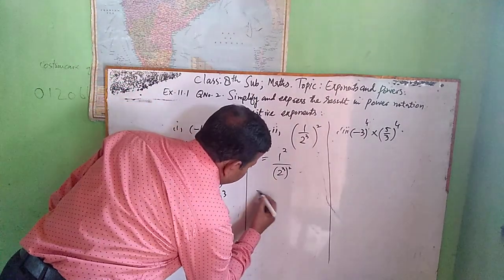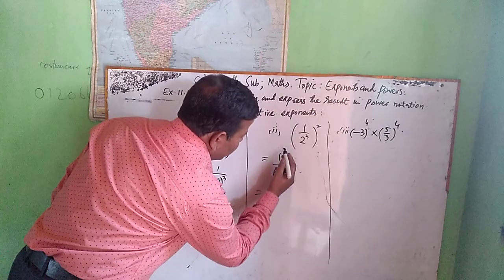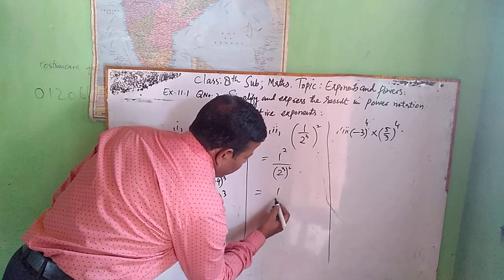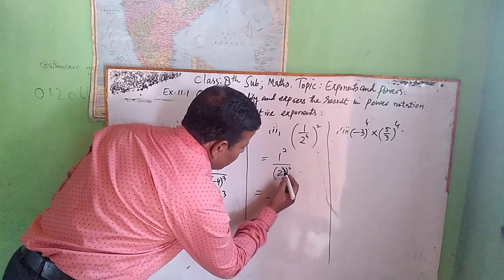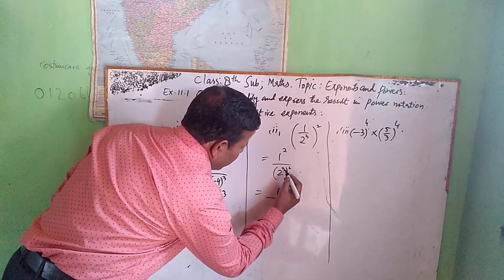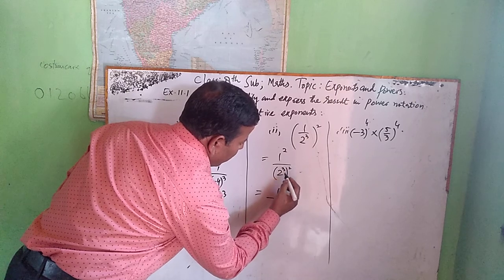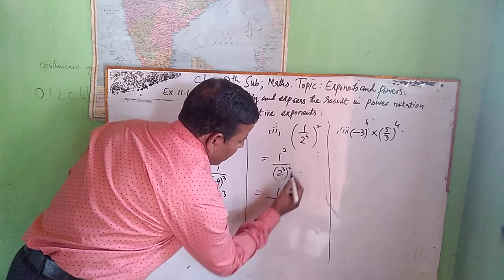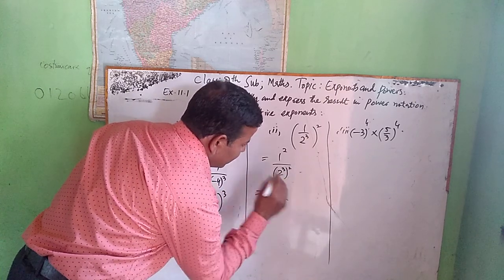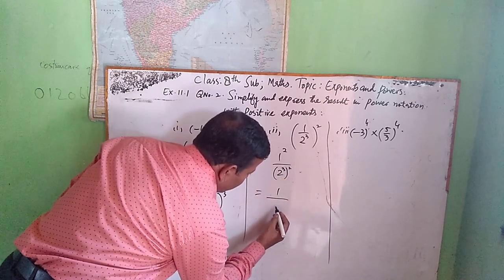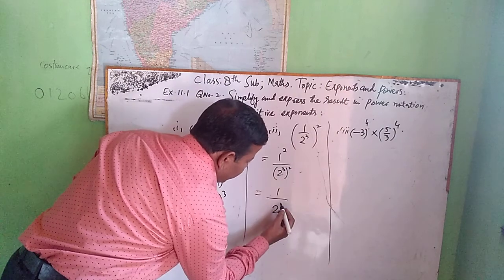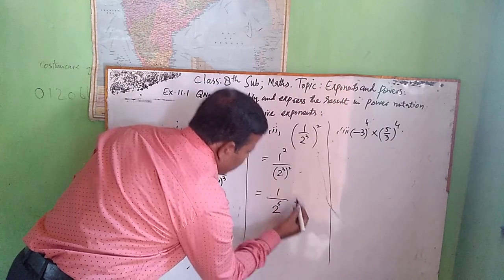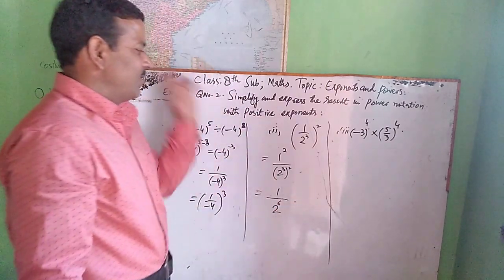We get 1 squared, which is 1, upon 2 raised to power 3 multiplied by 2 — that is 6. So the result is 1 upon 2 raised to power 6.